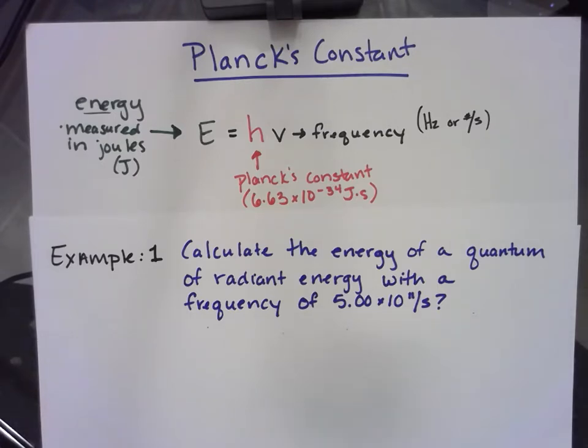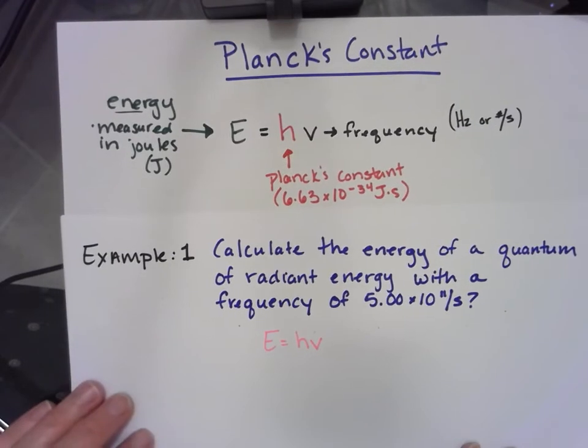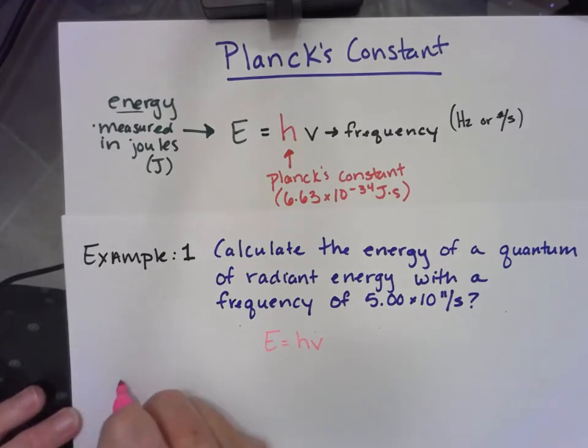Just like all math that we did this year, we're going to start with the formula. So E is equal to Planck's constant H times V. And then down the side I'm going to write the letters E, H, V.